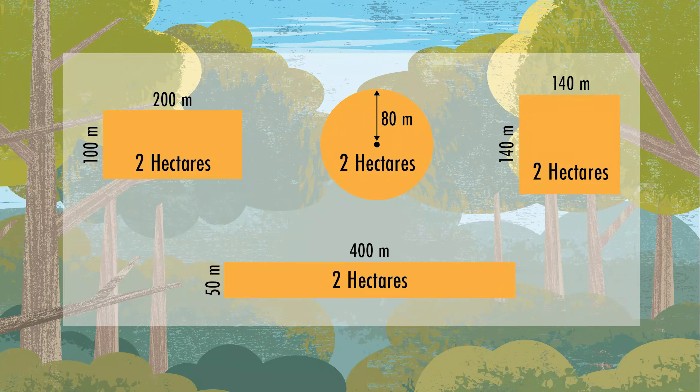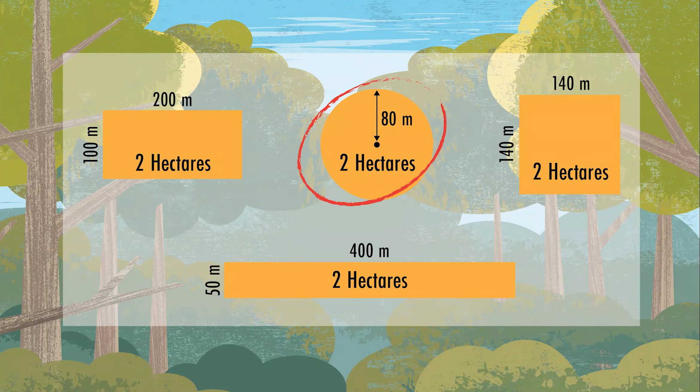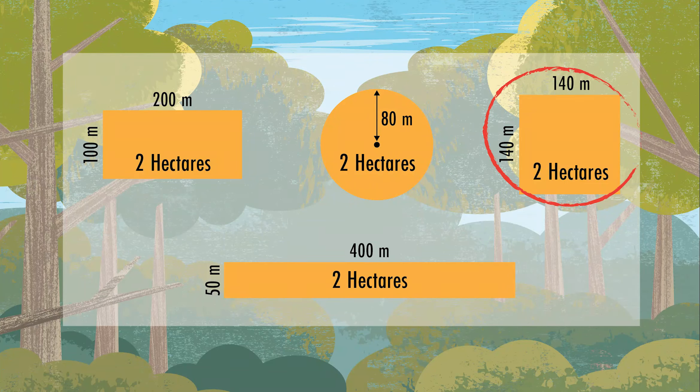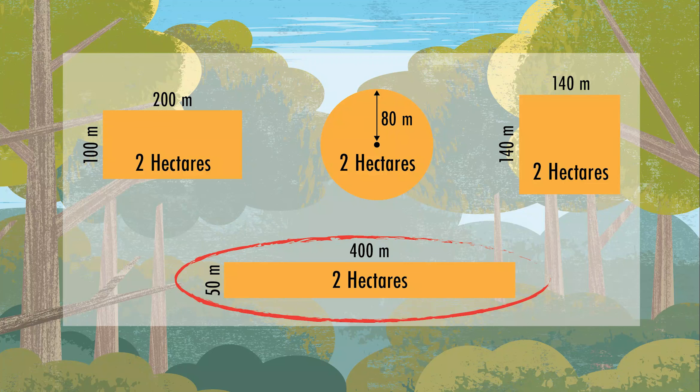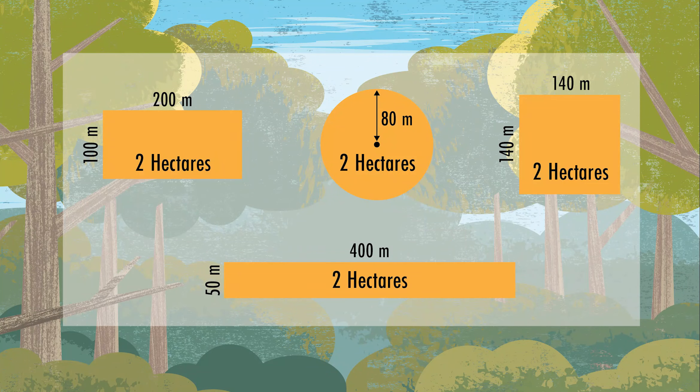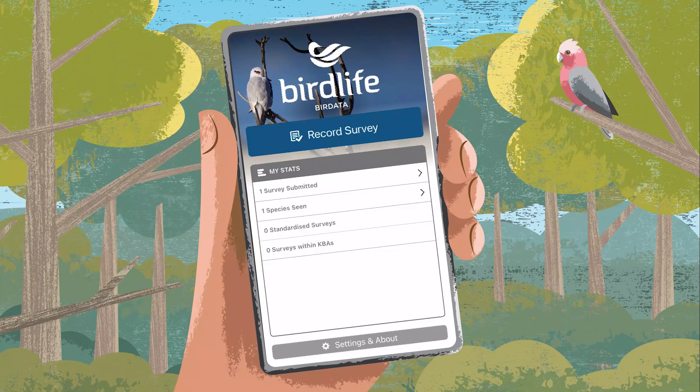Choose a site on your property, in a park or a nature reserve. Survey areas should be approximately 2 hectares, and that might look something like this.